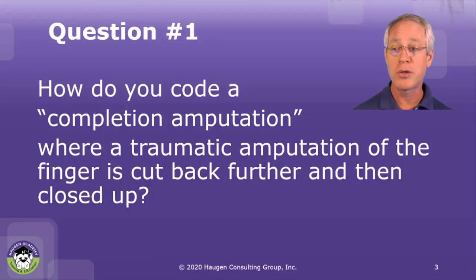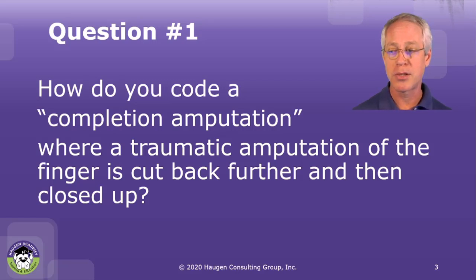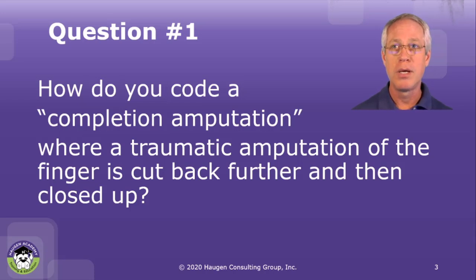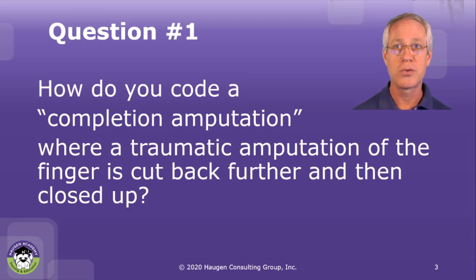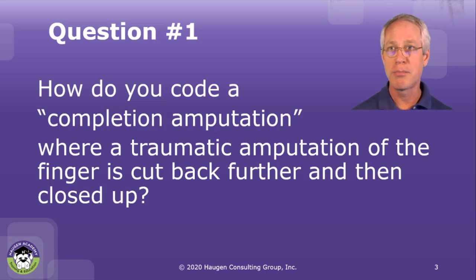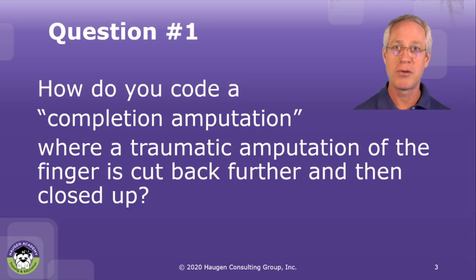Our first question is: how do you code a completion amputation, where the traumatic amputation of the finger is cut back further and then closed up? Well, it depends on how much tissue was removed, at what level, and ultimately how it's documented. If simply a rongeur is used to snip the bone back, smooth it up, and the skin is closed over it, it's probably best coded as an excision of bone and a root operation repair of the skin.